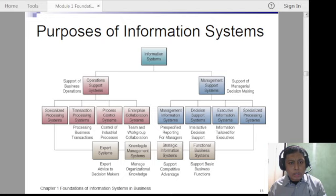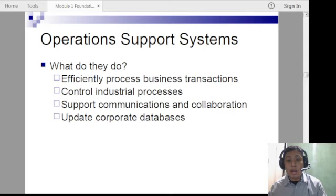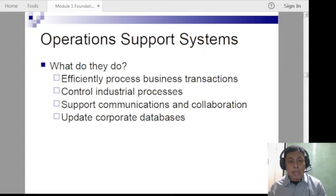Operation support systems efficiently process business transactions and control industrial processes. An example is the QR code system at malls — Pasig Pass, Antipolo Pass, Stay Safe QR Code — which supports the operation of ensuring that no one with COVID-19 symptoms enters the establishment. The QR code comes from an information system, collecting your encoded information like name and address so that if someone tests positive for COVID-19, you can be contacted for isolation or testing.